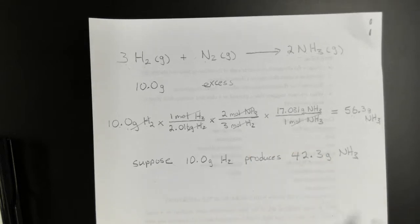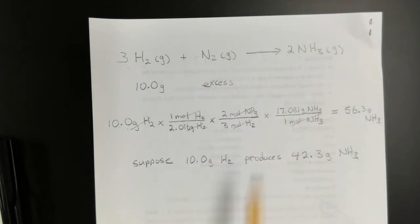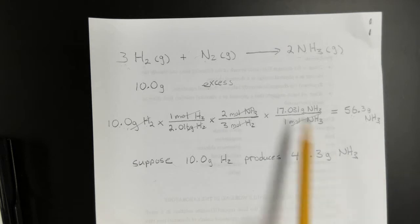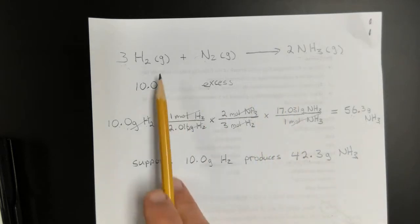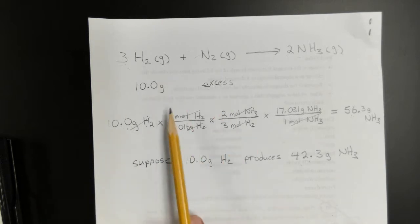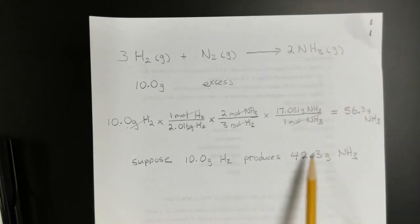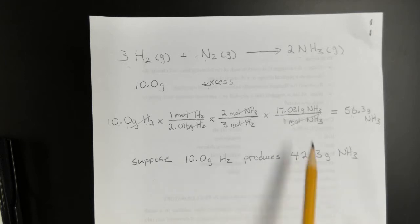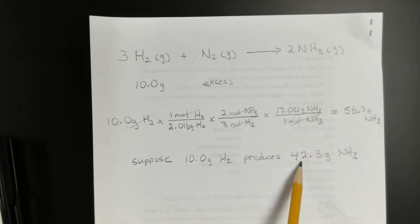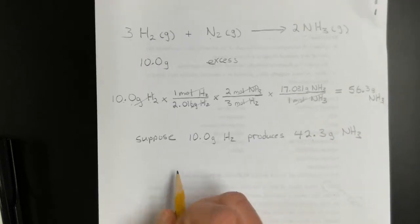There are many reasons why the actual yield may be less than theoretical. There could be an equilibrium situation — you'll learn about that next semester. Maybe some hydrogen gas escapes the reactor before it can all react, or some of the ammonia gas escapes and we're only able to isolate 42.3 grams. Those are variables that may limit the actual yield from equaling the theoretical yield.